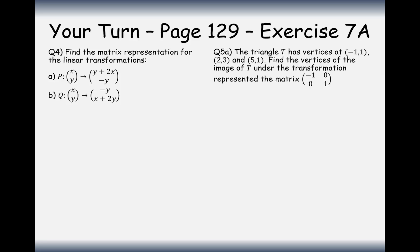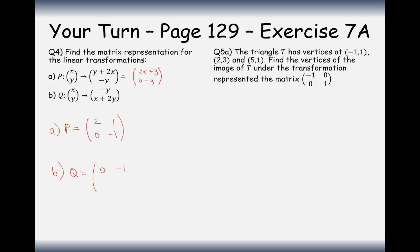Now your turn to try these two questions. The first is finding the matrix for given transformations, and the second is transforming the coordinates. For the first transformation P: it's 2x plus y on top and 0x minus y on the bottom, giving the matrix with 2 and 1 on the top row and 0 and minus 1 on the bottom row. For transformation Q: 0x minus 1y on the top and 1x plus 2y on the bottom, giving the matrix with 0 and minus 1 on the top row and 1 and 2 on the bottom.